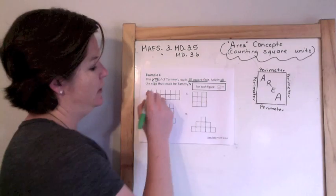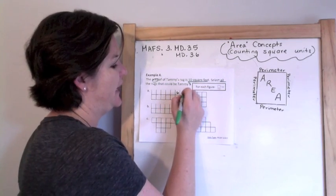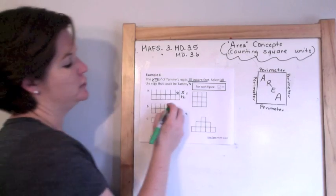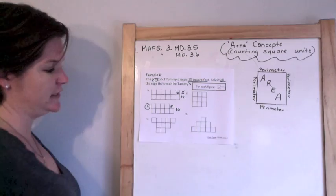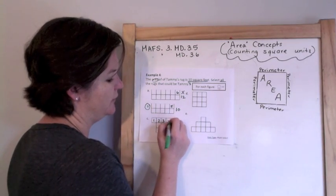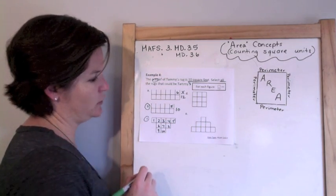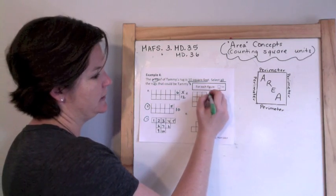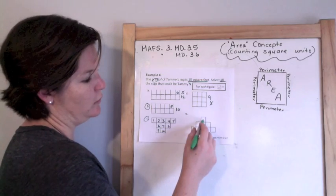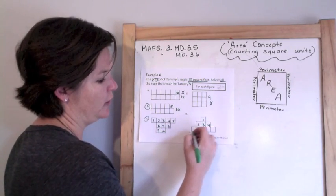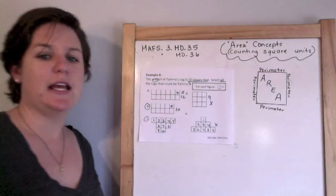Let's check. Option A: 1, 2, 3, 4, 5, 6 — six plus six is twelve. Not ten. Option B: 1, 2, 3, 4, 5 — five plus five is ten square feet. Ding ding ding! Option C: 1, 2, 3, 4, 5, 6, 7, 8, 9, 10. Ding ding ding — ten square feet! Option D: 3, 6, 9 — that's nine. That's wrong. Option E: 1, 2, 3, 4, 5, 6, 7, 8, 9 — also nine. So the answer is just B and C.